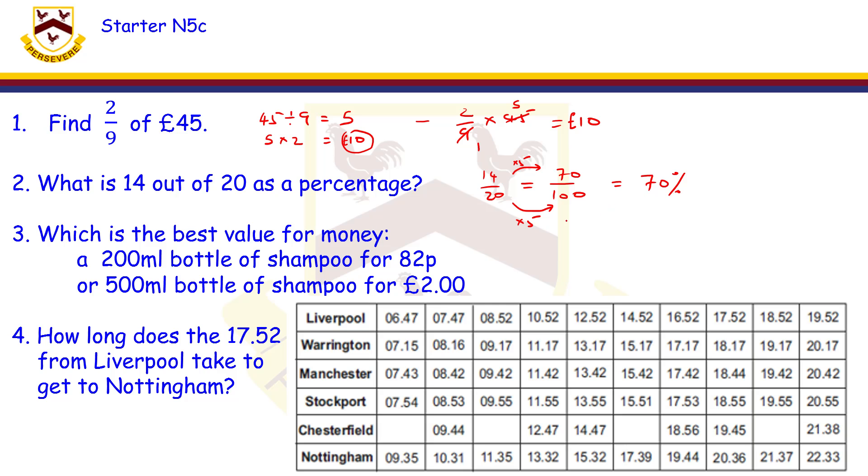Which is the best value for money? 200 ml bottle of shampoo for 82p, 500 ml bottle of shampoo for two pounds. How can I compare them? To make them the same, I'm going to make them 100 ml.